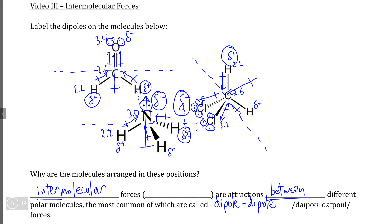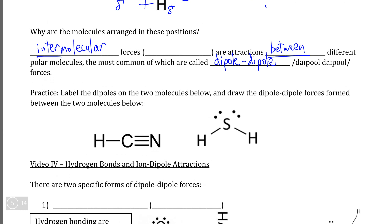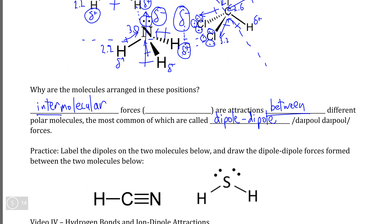Before you move on to the next video, there is practice you can do below. Both of these molecules — hydrogen cyanide and dihydrogen sulfide — are also polar molecules and oriented in a very specific way. Firstly, see if you can identify where the positive side and the negative side is on each molecule, and then see if you can identify where the dipole-dipole attraction is between these molecules.